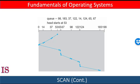If a request arrives in the queue in front of the head, it will be serviced almost immediately. A request arriving just behind the head will have to wait until the arm moves to the end of the disk and reverses direction and comes back. Assuming a uniform distribution of requests for cylinders, consider the density of requests when the head reaches one end and reverses direction. At this point, there are relatively few requests immediately in front of the head, since these cylinders have recently been serviced. The heaviest density of requests is at the other end of the disk. These requests have also waited the longest — so why not go there first? That's the idea behind the next algorithm.